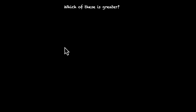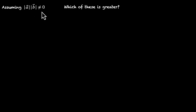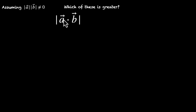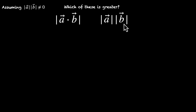In this video, we're going to talk about some inequalities involving dot products. Here's the first question: which of these is greater? When comparing, assume that these vectors are non-zero — their magnitude is not equal to zero. On the left-hand side, you have the mod of the dot product, mod of vector a dot vector b. And on the right-hand side, you have mod of vector a times mod of vector b. At first they both look similar, but this dot will change things.